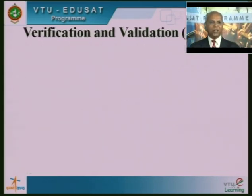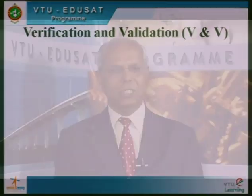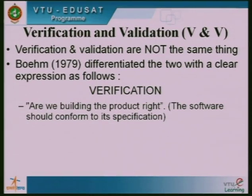Now we need to look at what is called verification and validation — a very common term used in quality control. These terms look similar but in practice they are slightly different. By definition, verification and validation are not the same thing. Barry Boehm differentiates the two clearly: verification answers the question 'Are we building the product right?' — that is, are we building the product correctly? We compare what has been done against the specification for that particular phase of development.